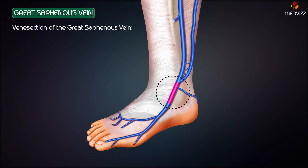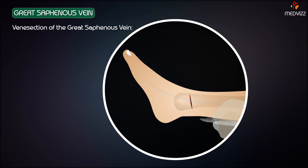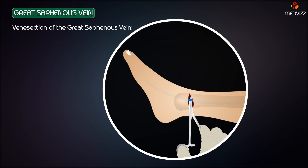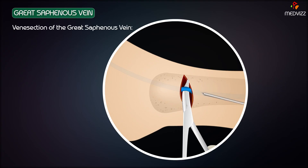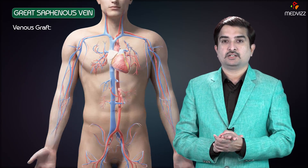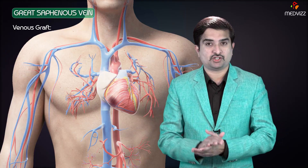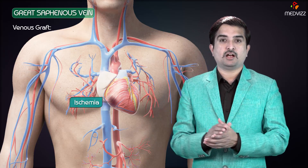Now let us talk about the clinical importance. The first is venous section of the great saphenous vein. The great saphenous vein in front of the medial malleolus at the ankle is the most preferred site for venous section in emergency conditions where the superficial veins elsewhere in the body are collapsed and invisible, especially to insert a cannula for prolonged administration of intravenous fluids.